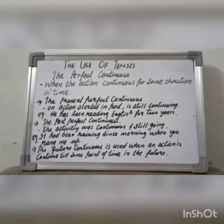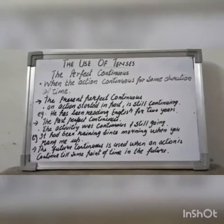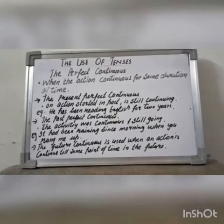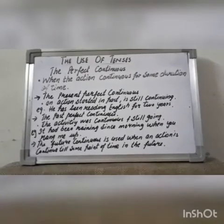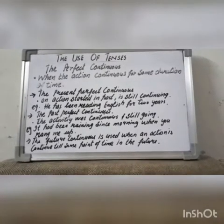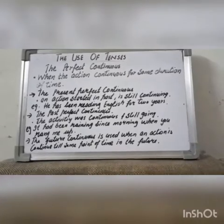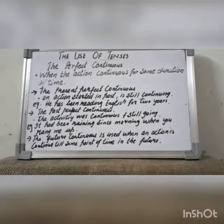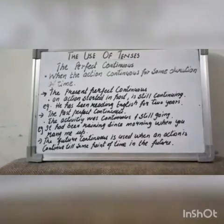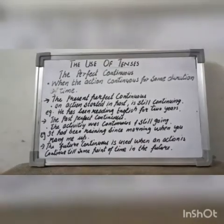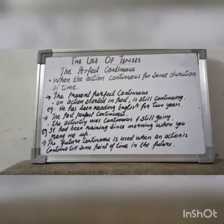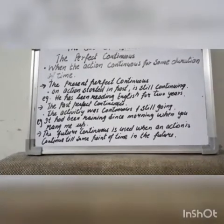Perfect Continuous Tenses: the perfect continuous is used when an action continues for some duration of time. To express duration, the prepositions 'for' and 'since' are used. 'For' is used when the period of time taken by an action is mentioned — for example, 'for a month,' 'for three years,' 'for a long time.' 'Since' is used when the point of time at which the action began is mentioned — for example, 'since Sunday,' 'since breakfast,' 'since yesterday.'